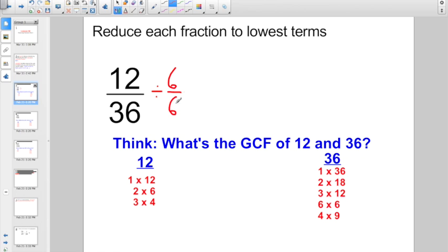6 is a common factor. And 12 divided by 6 is 2. 36 divided by 6 is 6. And a lot of times, I start seeing kids making this mistake. Look at the numerator and the denominator. They are both even numbers, aren't they?